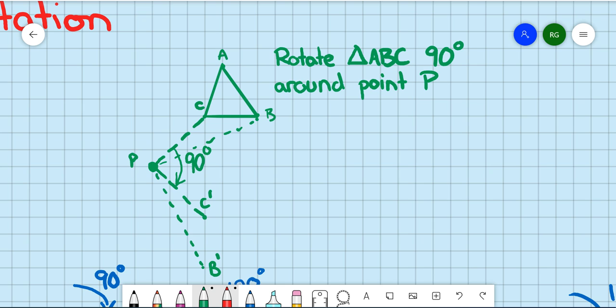I can also see, because this C to B line is pointing horizontally, because I've turned it 90 degrees, the next one has to go down like that. And then, if I match up my images, A is going to appear to be here.